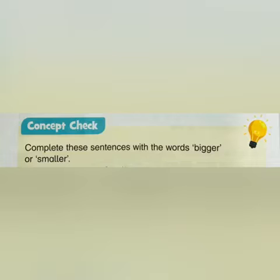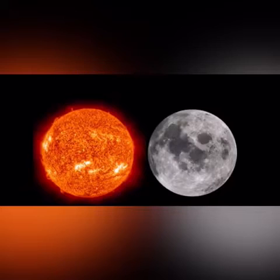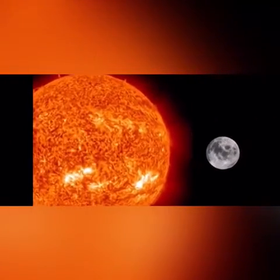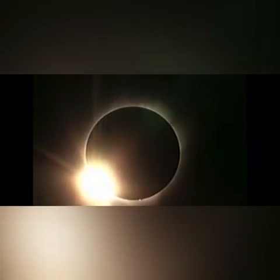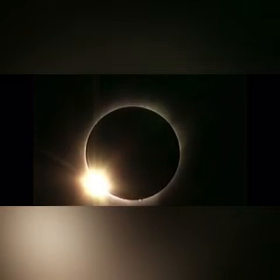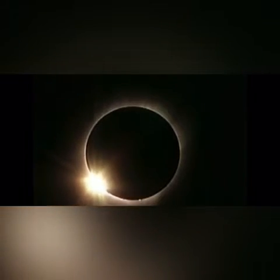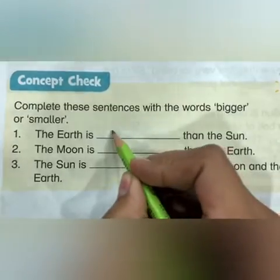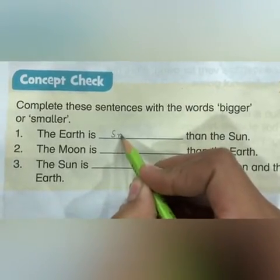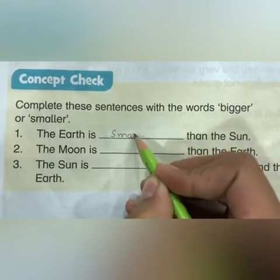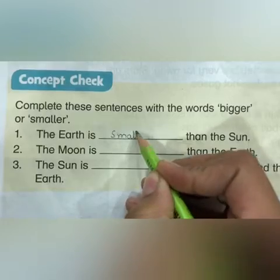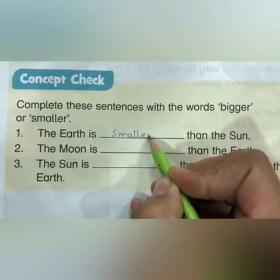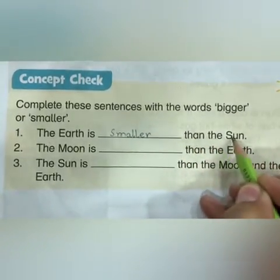Complete these sentences with the words 'bigger' or 'smaller'. Number one: the earth is smaller — say 'smaller' with me — than the Sun.